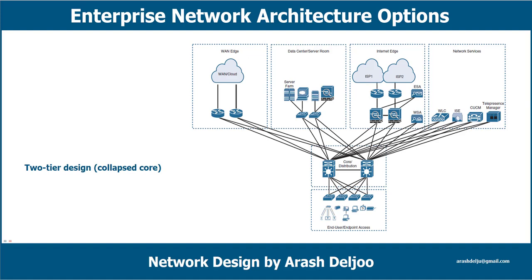In this video I'm going to talk about enterprise network architecture options. There are multiple enterprise network architecture design options available for deploying a campus network, depending on the size of the campus as well as the reliability, resiliency, availability, performance, security, and scalability. Because of that, we should know about each of these features in one design option.